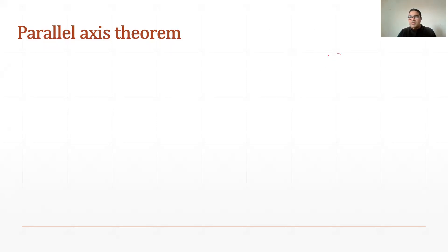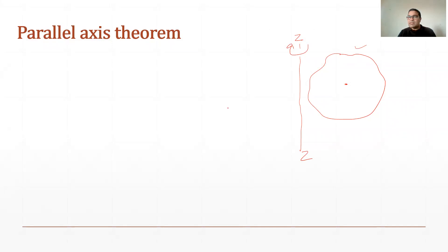For example, if there is an area and the CG or centroid of this area is at a certain point. Now if I have to rotate this whole area about any axis, say axis ZZ, this axis is not passing through the centroid of this body. So how do we find out the moment of inertia in that case?